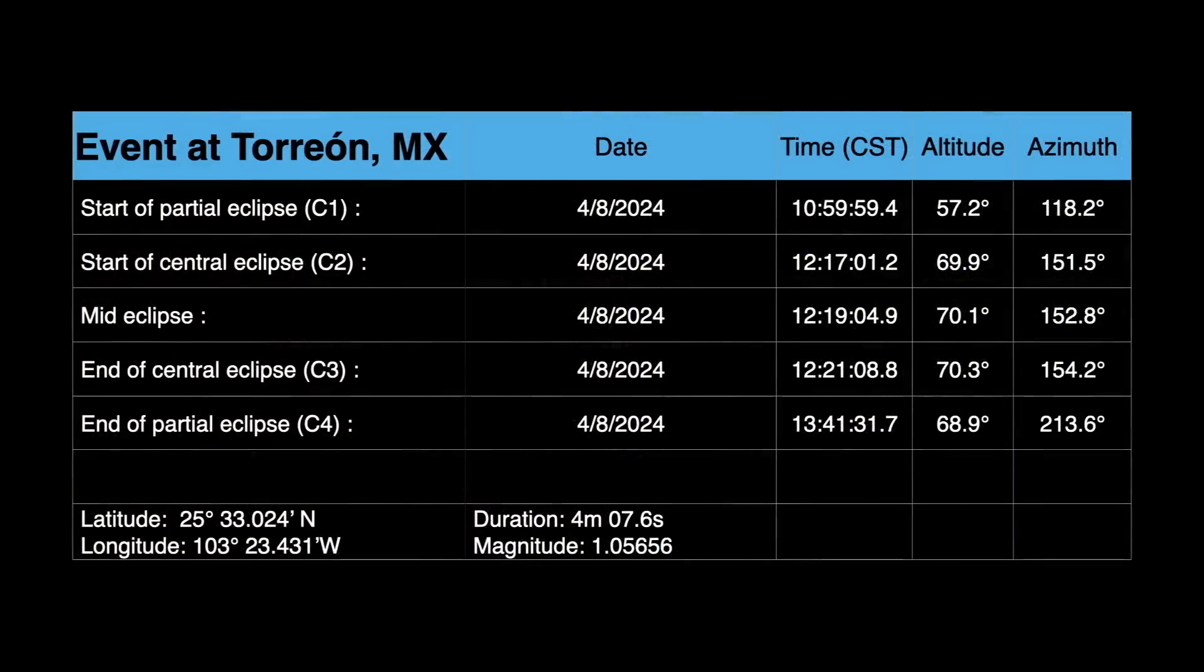The umbra, or shadow of the sun, first passes over our location in Torreon, Mexico. Here, the partial phases of the eclipse start at 11 a.m. and ends at 1:41 with the mid and maximum eclipse at 12:19 local time.